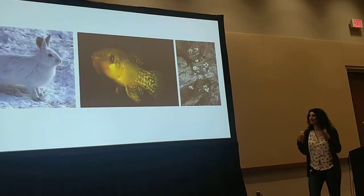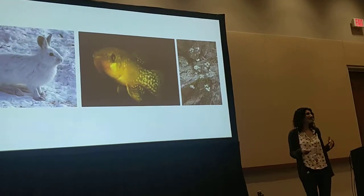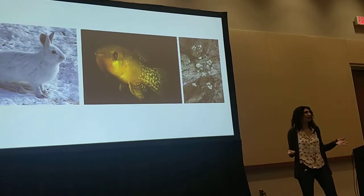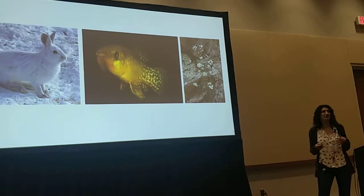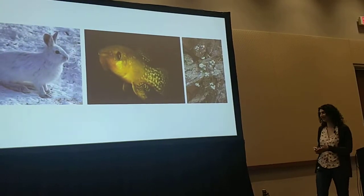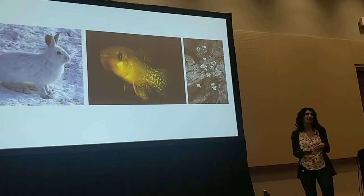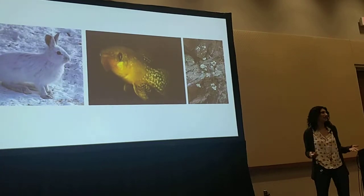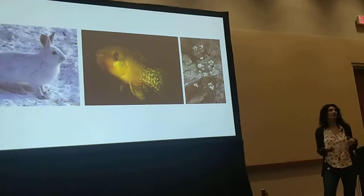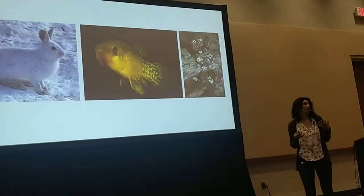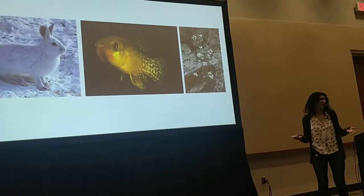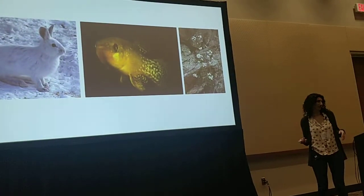Especially in this session, we can appreciate that gene flow can provide a really important source of genetic variation that natural selection can act on. And so when hybrids back cross into a parental population, natural selection can favor the spread of alleles that are newly introduced to that population, and we call that adaptive introgression.